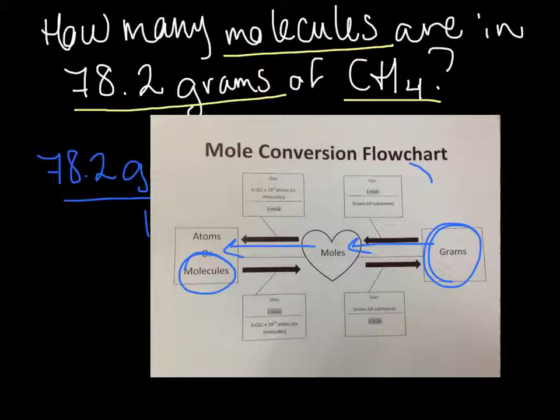The first step we'll use is this conversion factor: one mole over the grams in the substance, which is the molar mass. And the second one we'll multiply it by is 6.02 times 10 to the 23rd molecules over one mole.